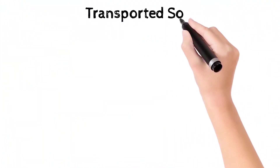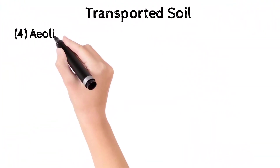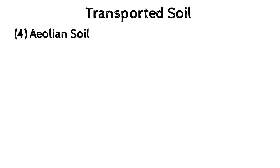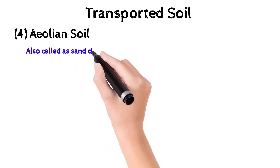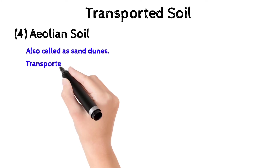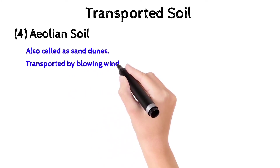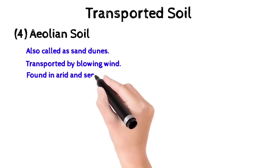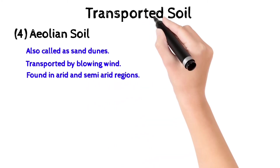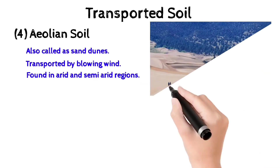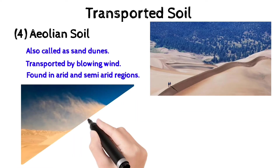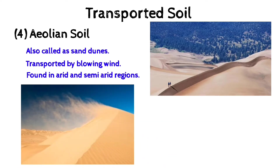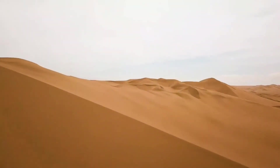The fourth classification of transported soil is aeolian soil, also called sand dunes, which may be seen in desert areas. It is transported by blowing winds and is found in arid and semi-arid regions. Due to blowing winds, sand dunes are transported from one place to another.